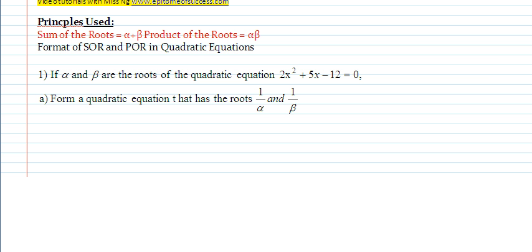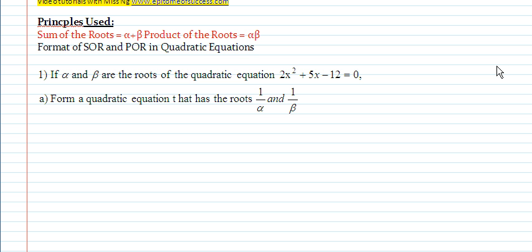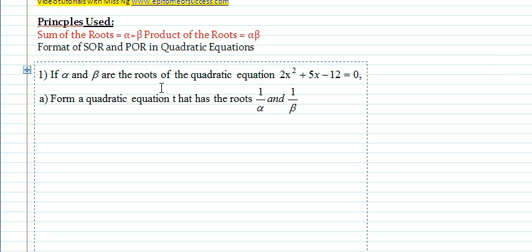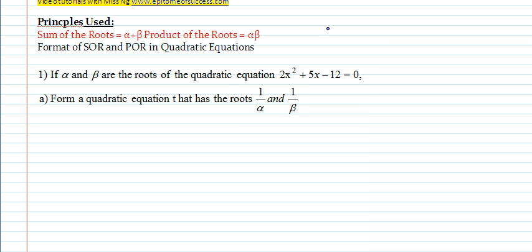Hi there, welcome to another video tutorial with Ms. Ng. Today I'm going to explain to you how to form a quadratic equation given the roots. If alpha and beta are the roots of the quadratic equation 2x² + 5x - 12, you need to form a new equation if the roots are 1 over alpha and 1 over beta.